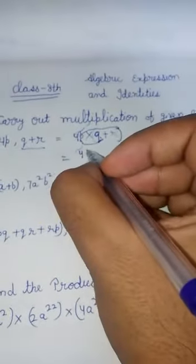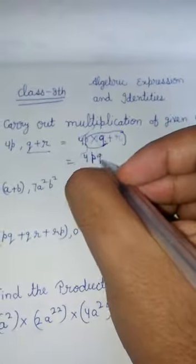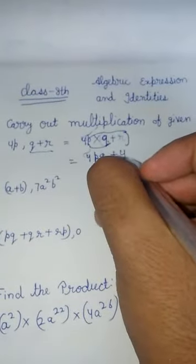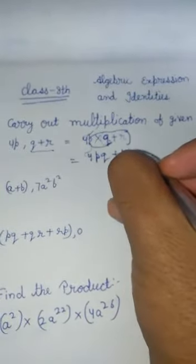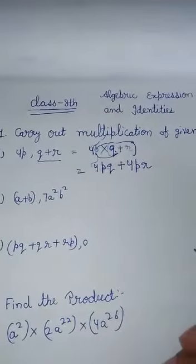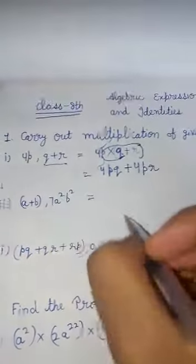We will multiply the sign, plus 4 PR. Understand? Now, similar way here.